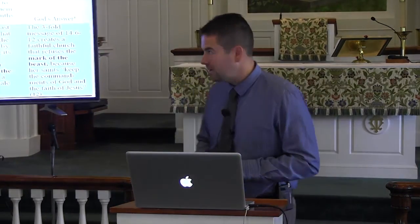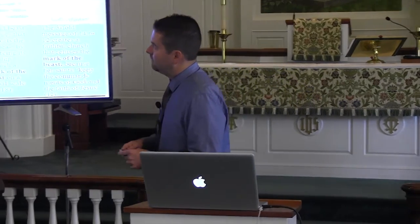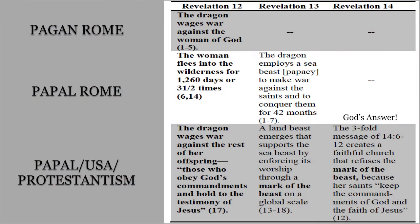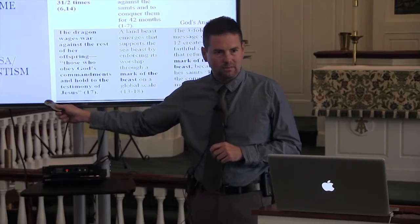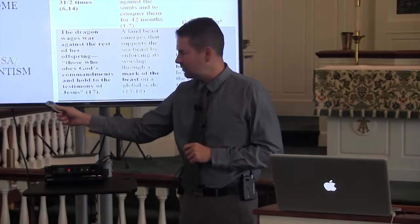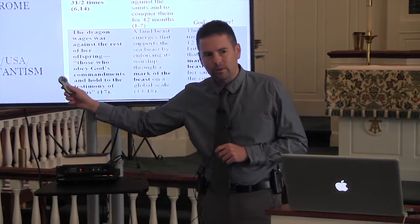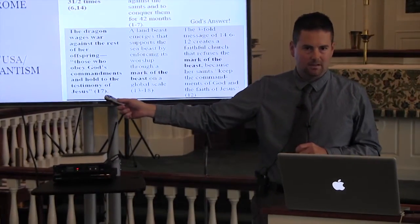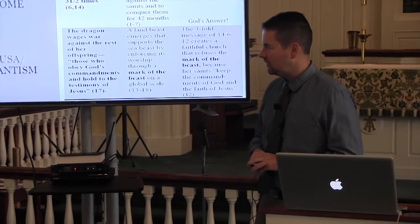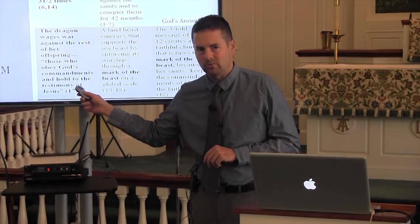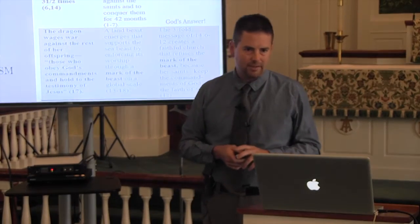So looking briefly ahead at what we will study in the future, we saw in Revelation 12 three phases of Rome. Pagan Rome against God's people. Papal Rome for 1,260 days or years prophetically against God's people. And then there is this threefold union, this new front in Revelation 12:17, where Satan will combine with the United States and with Protestantism to form this new threefold union, this battleground against God's final people that are alive on the face of the earth.